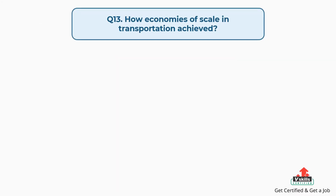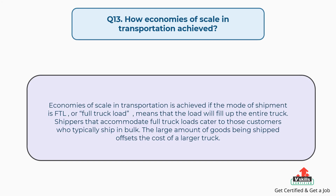Question number thirteen: how are economies of scale in transportation achieved? The answer is economies of scale in transportation is achieved if the mode of shipment is FTL, or full truckload, meaning the load will fill up the entire truck. Shippers that accommodate full truckloads cater to those customers who typically ship in bulk. The large amount of goods being shipped offsets the cost of a larger truck.